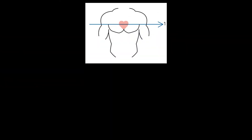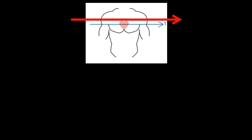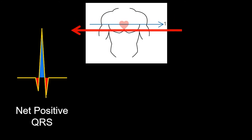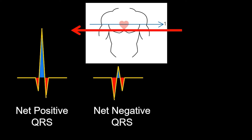For example, if we take lead 1, which is the vector between the right arm and the left arm, if the electrical signal is moving from the right side to the left side, the QRS will be positive, meaning that the overall area within the QRS is positive — there is more positive than negative. If the vector of electrical current is moving opposite of lead 1, meaning from the left arm to the right arm, then the QRS complex will be overall negative, meaning the area is more negative than positive.